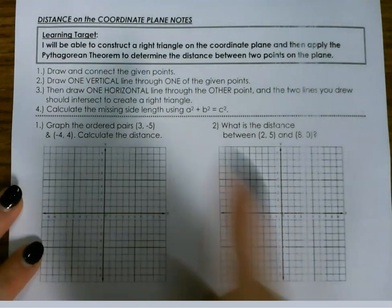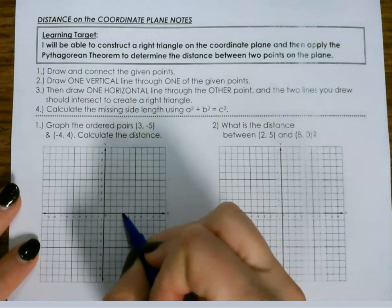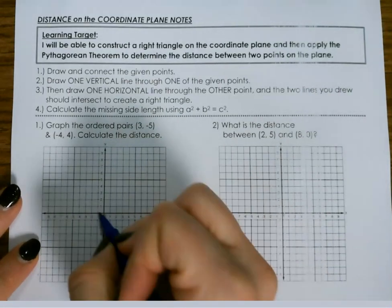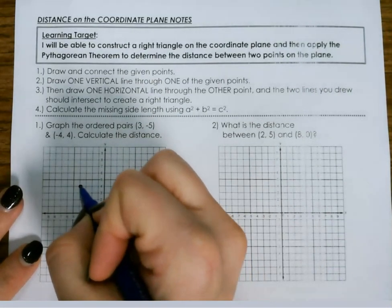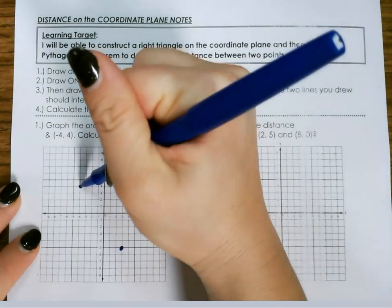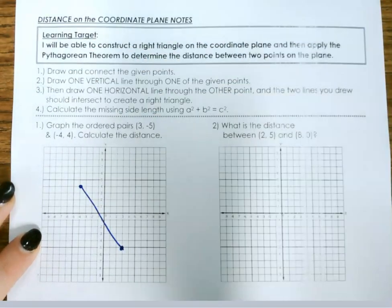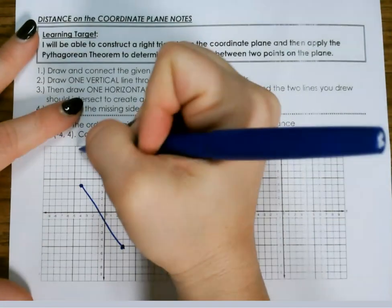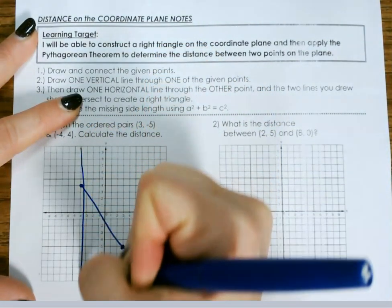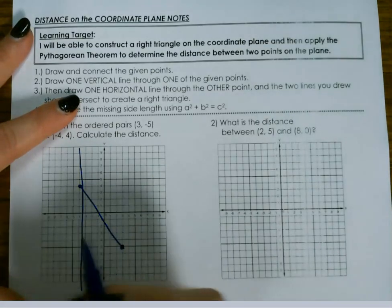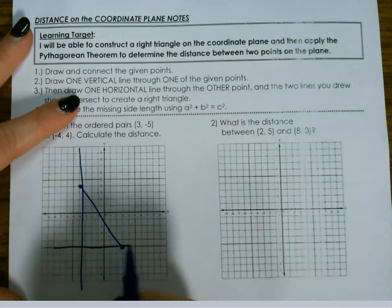So our first example we're going to plot 3, negative 5, and negative 4, 4. Then we're going to connect those points, then we're going to draw a vertical line through one, assuming that's a straight line, and a horizontal line through the other.